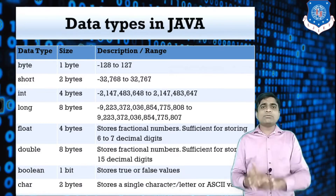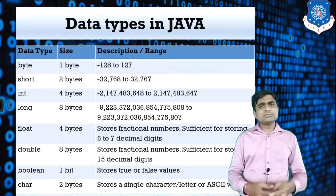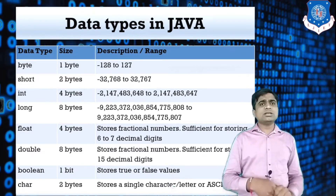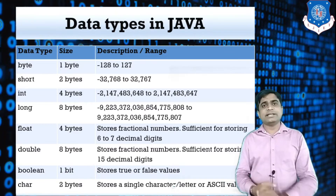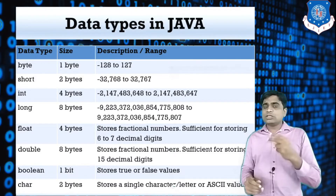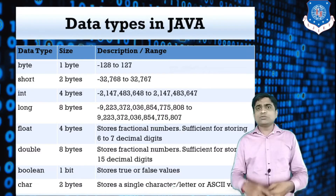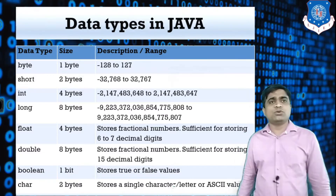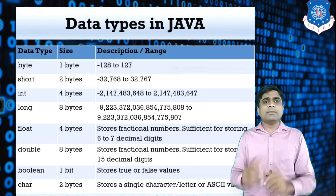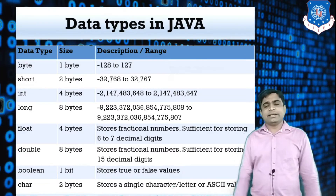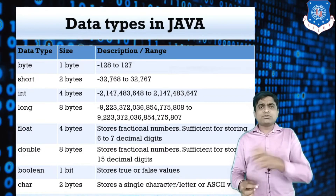For floating-point values, you have options: float, double, or long — though long is also used for integer types. For floating-point specifically you have two options: float and double. The size of the float data type is 4 bytes and the size of double is 8 bytes. Whenever you require a floating-point value, you can use float as a data type.